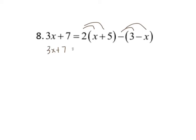So I take 2 times x is 2x, 2 times 5 is 10. Then negative times 3 is negative 3, and negative times negative x is positive x. At this point I combine like terms on the right side: 2x plus x is 3x, and 10 minus 3 is 7. At this point something a little different is going to happen — the x's are going to cancel.